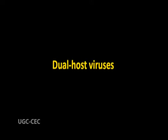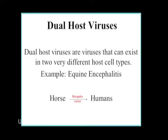The sixth group of viruses is called dual host viruses. This group includes those viruses which infect more than one type of host. It is possible only because two different hosts possess on their cells the same receptor protein which is able to provide an attachment site for the virus.